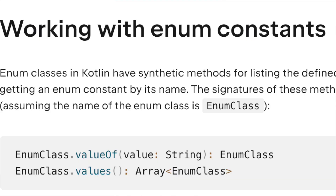Enum has in-built functionality. You can access the value, you can access the index, you can use values. So this is Enum — these are the implicit built-in features.